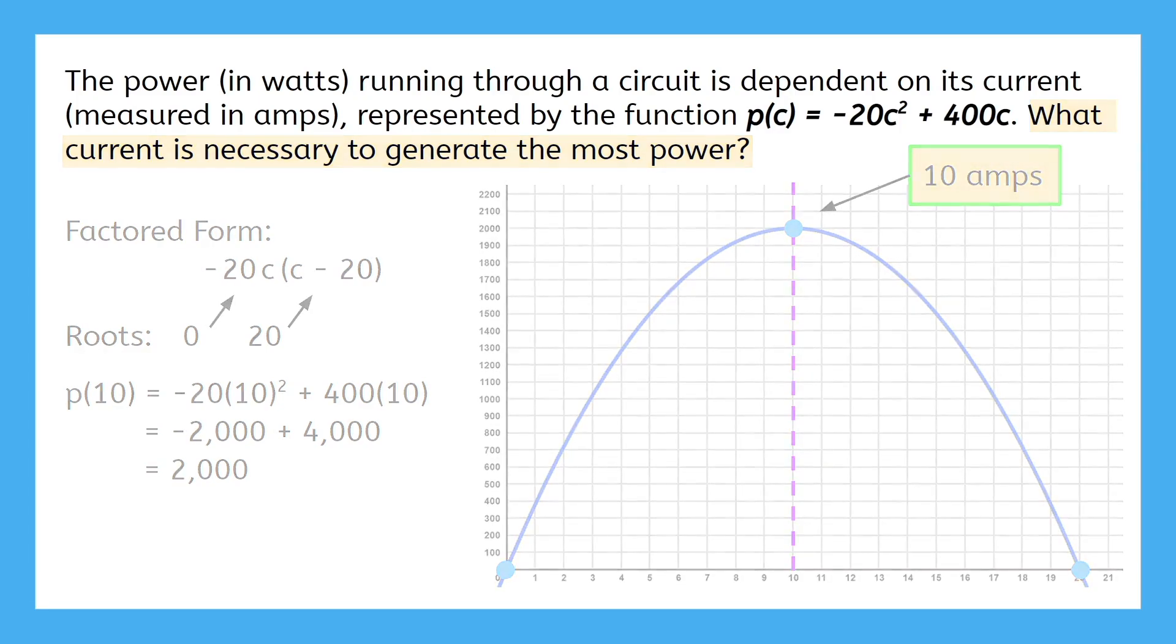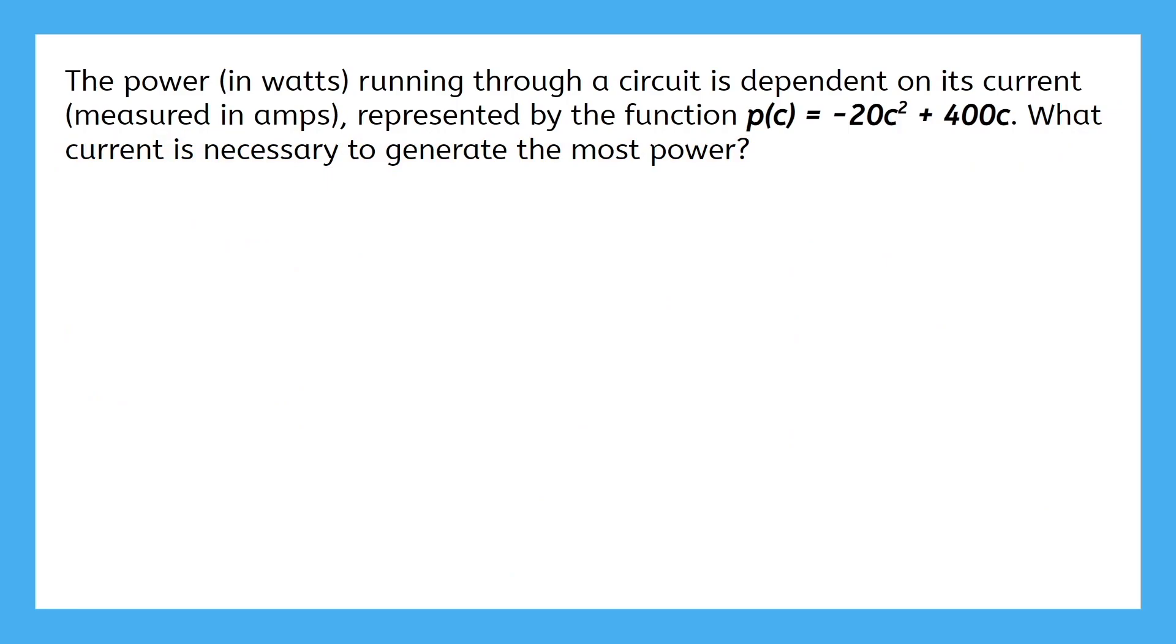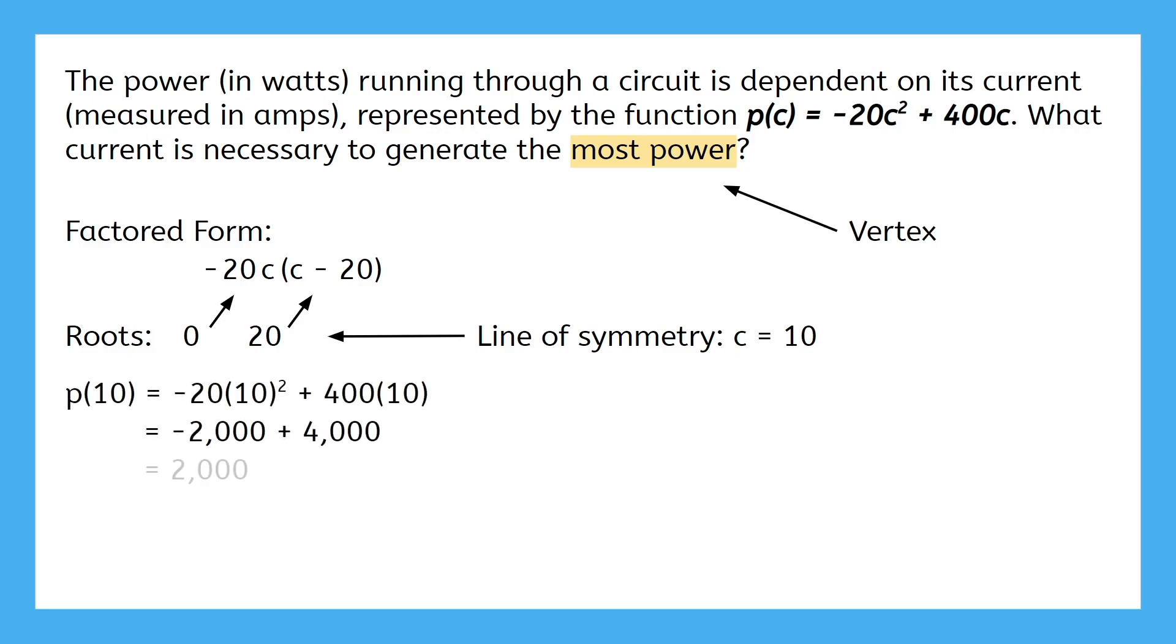Now let me just point out that we didn't actually need the graph on that last problem. We know that a maximum can only be found at the vertex. So we could factor the function, find the roots, locate the line of symmetry directly in the middle of those roots, and then plug that into the function to find the output for the vertex, which turns out to be at (10, 2000). So then the maximum occurs when the current's at 10 amps. No graph is needed.